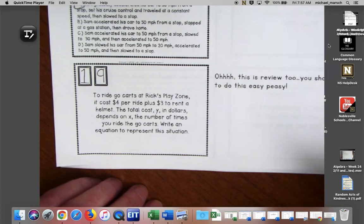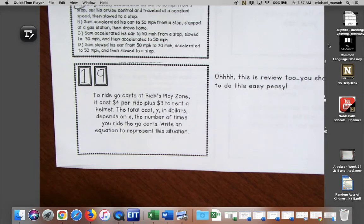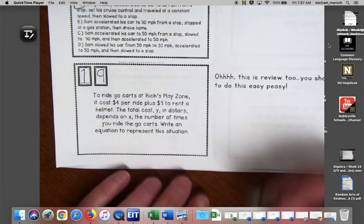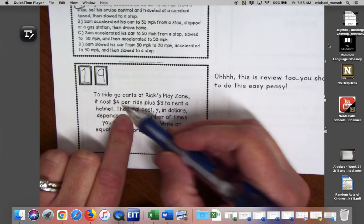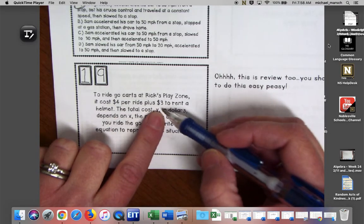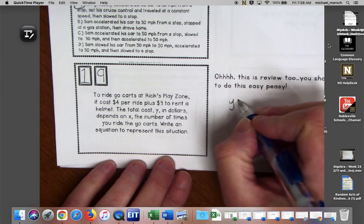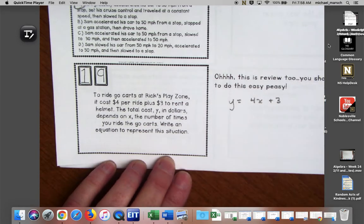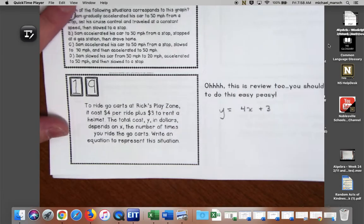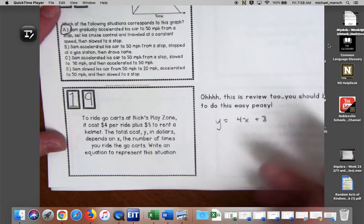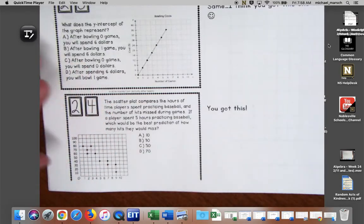Number 19, to ride go-karts at Rick's Play Zone, it costs four dollars per ride plus three dollars to rent the helmet. The total cost y in dollars depends on x, number of times you ride the go-karts. Write an equation. This is easy. We have our repeating fee, that's going to be our slope, and we have our one-time fee just to rent the helmet, that's going to be my y-intercept. Hopefully you got y equals 4x plus 3. Easy peasy.